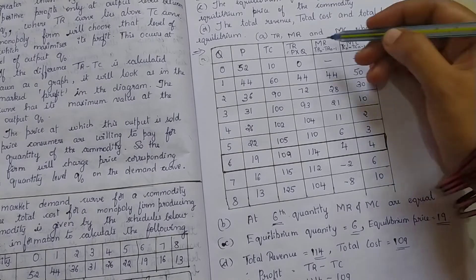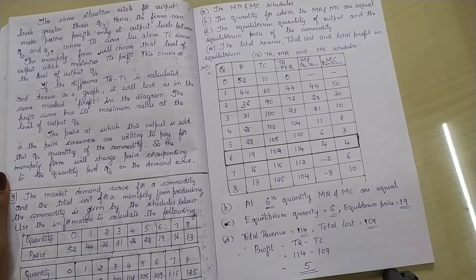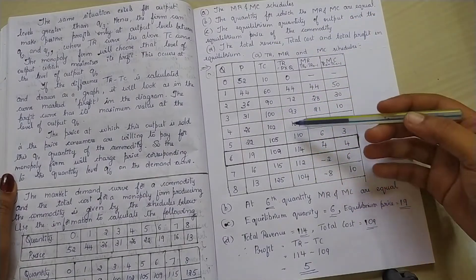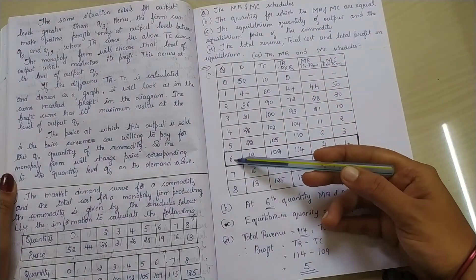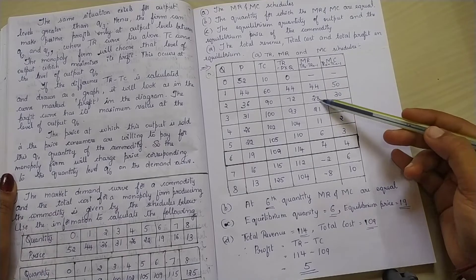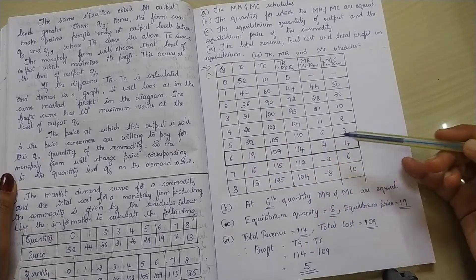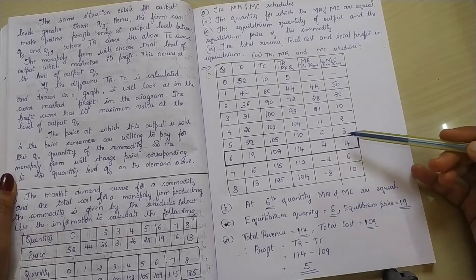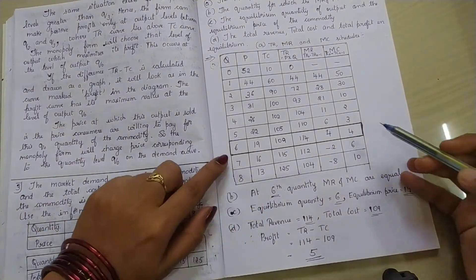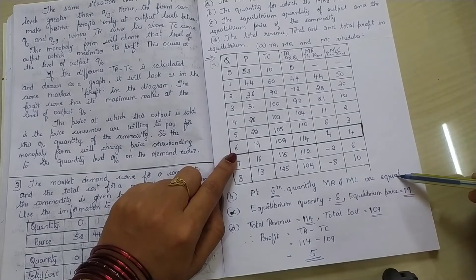Now, we shall move on to the second question. They have asked, the quantity for which the MR and MC are equal. So, after making this table, in this table, for which quantity are MR and MC values equal, the same? If you see, here the values are different, here also it is different, everywhere it is different, but here, at the sixth quantity, MR marginal revenue and marginal cost values are equal. Here also it is 4, here also it is 4. So, what will be your answer? The answer is at sixth quantity. The quantity is 6. So, at sixth quantity, MR and MC are equal.